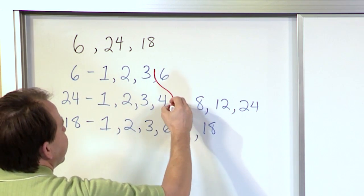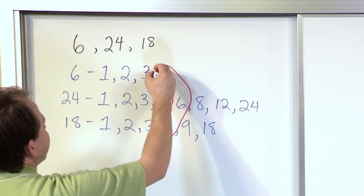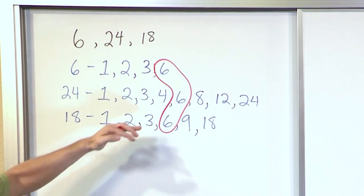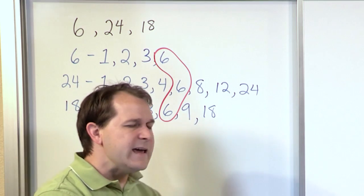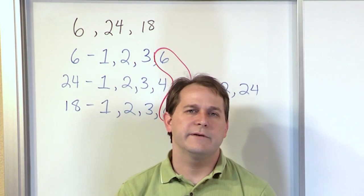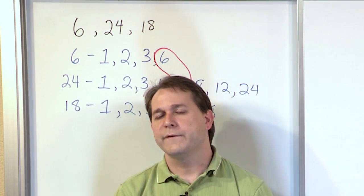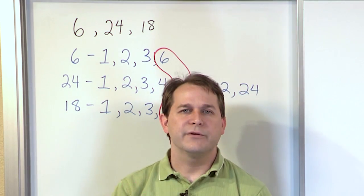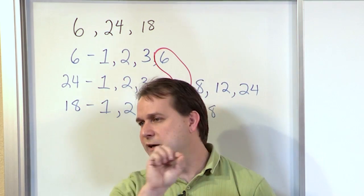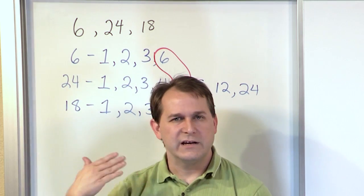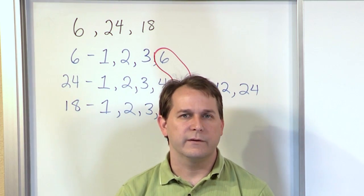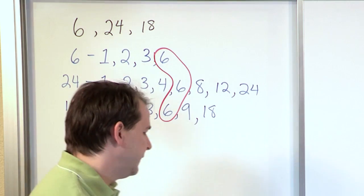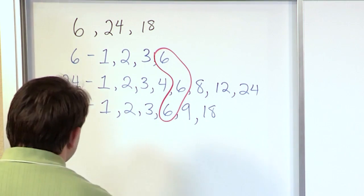So we've written all the factors of all three numbers and we can see right away that 1 is a common factor, 2 is a common factor, 3 is a common factor, but the greatest common factor is actually the number 6 because that is the largest factor common to all three lists.